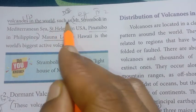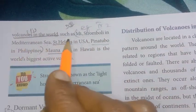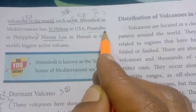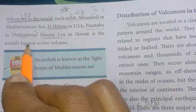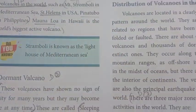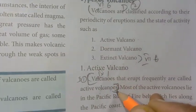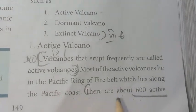Examples of active volcanoes: Mount Stromboli in the Mediterranean Sea, Mount St. Helens in USA, Pinatubo in Philippines, and Mauna Loa in Hawaii — the world's biggest volcano. These are the 600 active volcanoes.